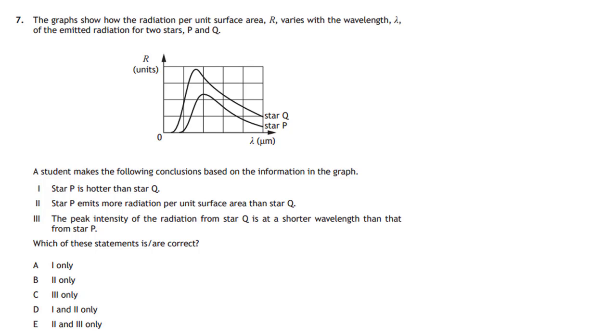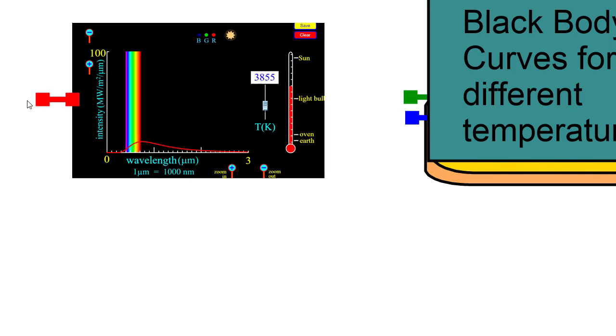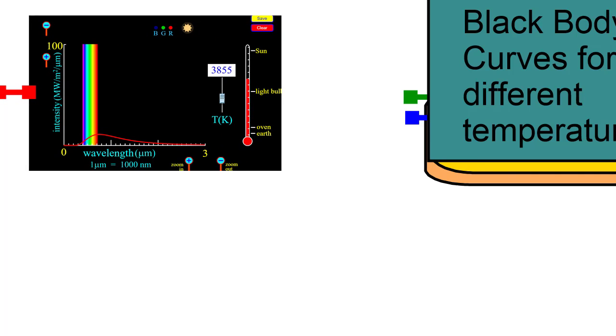Question 7 is a difficult question because we have to understand what this graph is all about. The graph shows how the radiation per unit surface area R, and it's given the units of it, varies with the wavelength lambda of the emitted radiation of two stars P and Q. Now before we launch into the question, a quick bit of revision on these graphs, which we call the black body graphs or the black body curves.